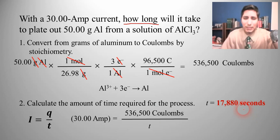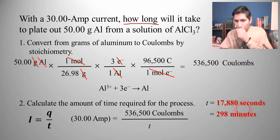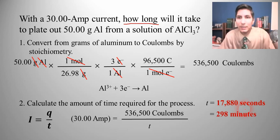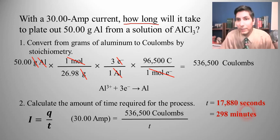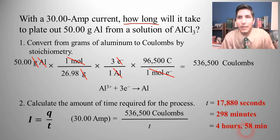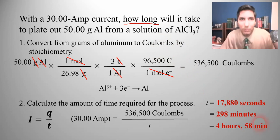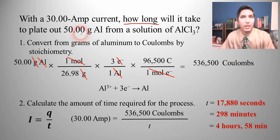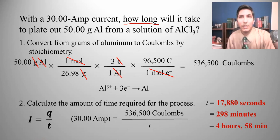17,880 seconds is hard to visualize, so let's convert. Dividing by 60 gives about 298 minutes. Dividing by 60 again gives about 4 hours and 58 minutes — almost 5 hours. So with a 30 amp current, it takes nearly 5 hours to produce just 50 grams — not even a couple of ounces — of aluminum from aluminum chloride. Aluminum requires a lot of electricity to produce by electrolysis.